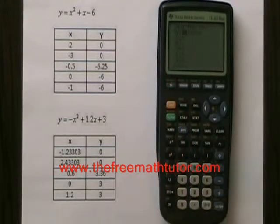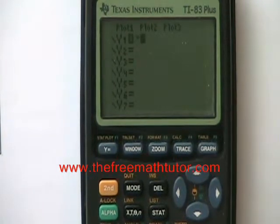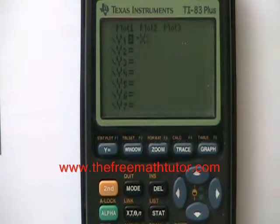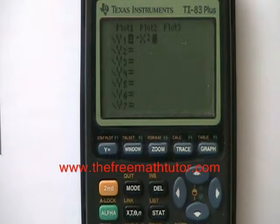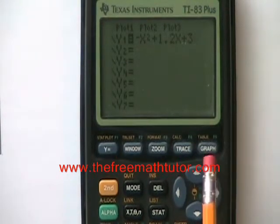If I go into Y= and hit CLEAR, it removes the first equation. Now it's time to enter the second equation. I'm hitting the minus sign key, X, the X² key, plus 1.2X again, plus 3. And I hit GRAPH.